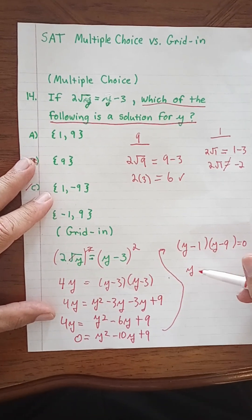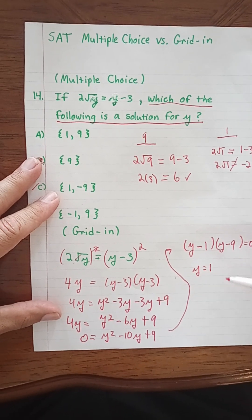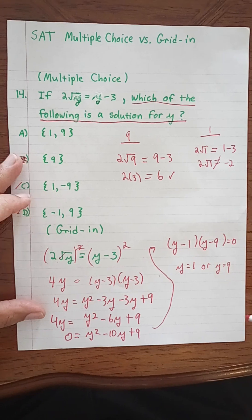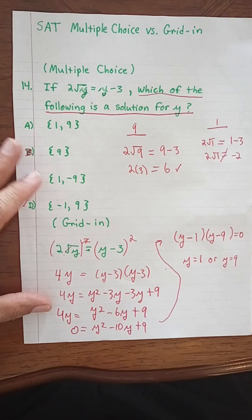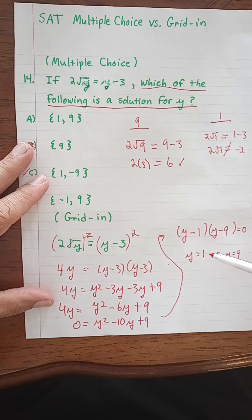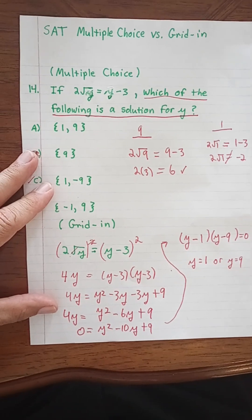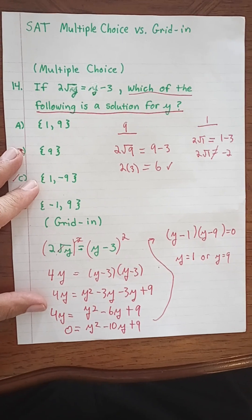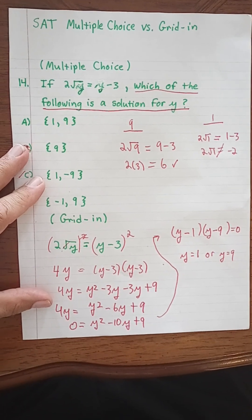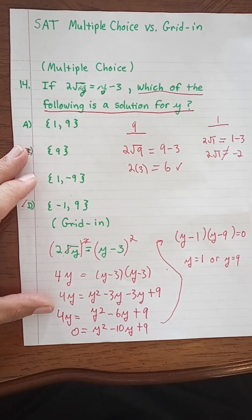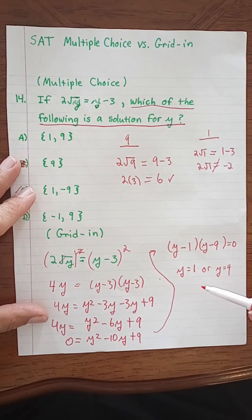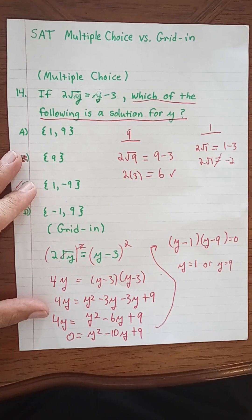So y is going to equal 1, or y is going to equal 9, which is what we had over here. And again, in order to determine whether 1 or 9 would work in a grid in, we would need to plug it in to our original equation to see which one works and which one gives us an extraneous solution. An extraneous solution would be an extra solution, one that does not work.